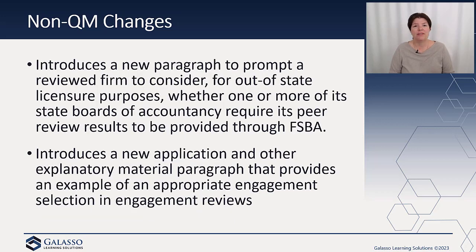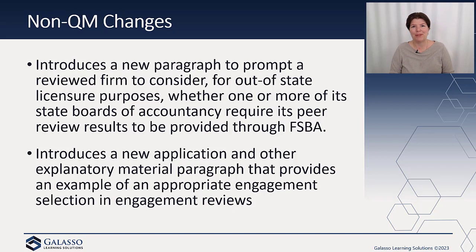It introduces a new paragraph to prompt a reviewer to consider, for out-of-state licensure purposes, whether one or more of its state boards of accountancy require its peer review results to be provided due to the facilitated state board access. With multiple states, reciprocity, and mobility — topics we discuss at council — the FSBA is required by some states, so you have to make that evaluation.